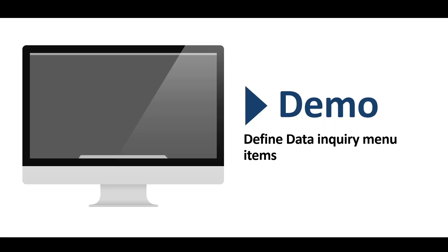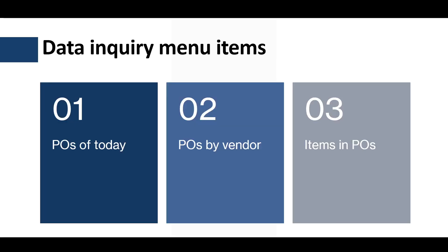Now let's review a quick demo on how to define a data inquiry menu item. In this demo, we're going to define three data inquiry menu items: the first to show purchase orders that will be received today, the second to show purchase orders of a specific vendor by searching by the vendor's name, and the third to show the line details of a specific purchase order.